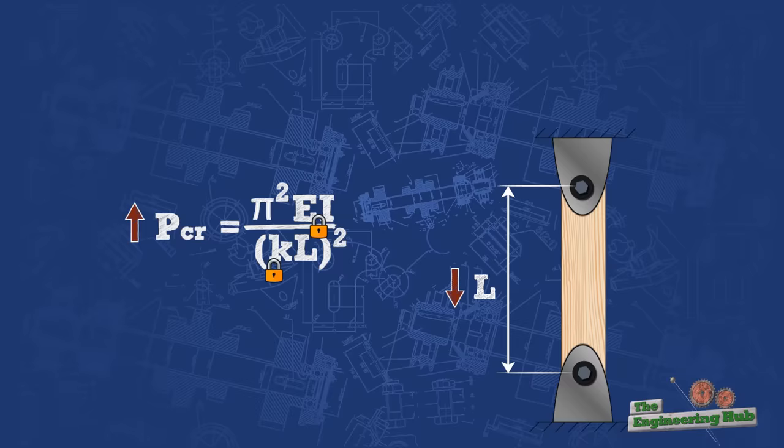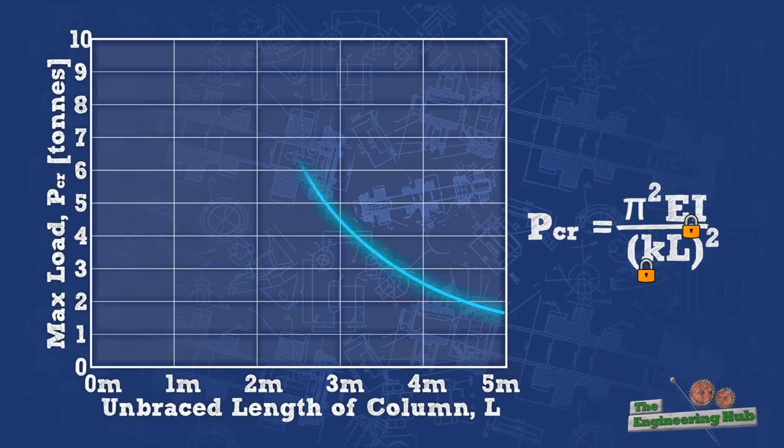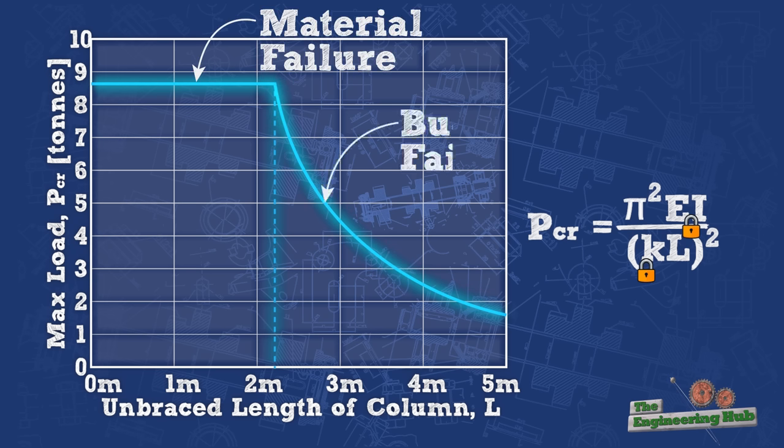But of course, this is not the case, because at some point, the compressive capacity of the material itself starts to govern the strength of the column rather than the buckling being the governing factor. For that reason, the Euler's curve is capped at the limit strength of the material.